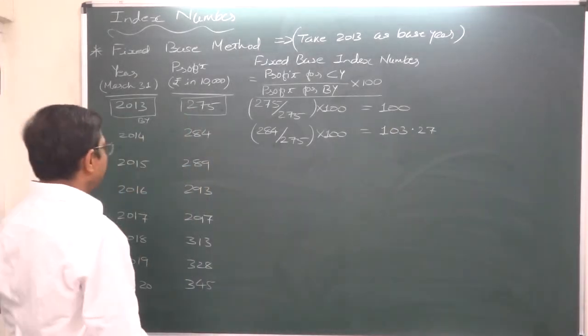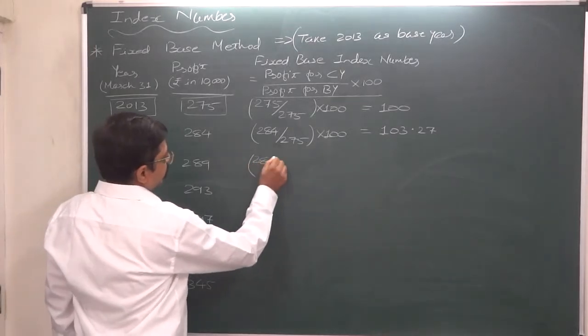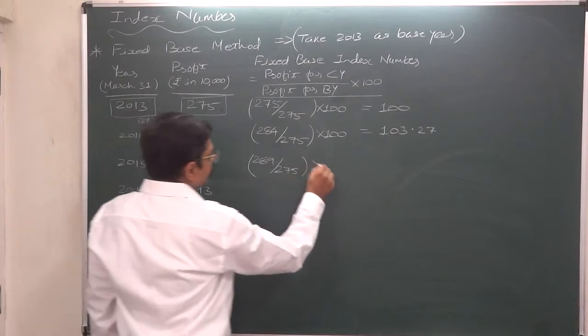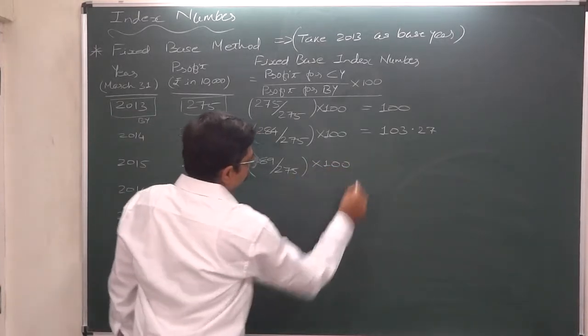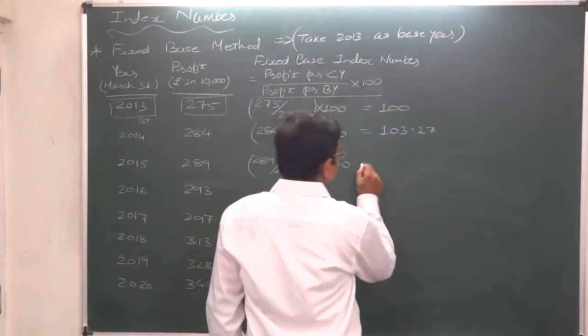Let's calculate for 2015. Profit for 2015 current year, 289, divided by profit for base year 275, into 100. Again, a marginal increase is there - 105.09.